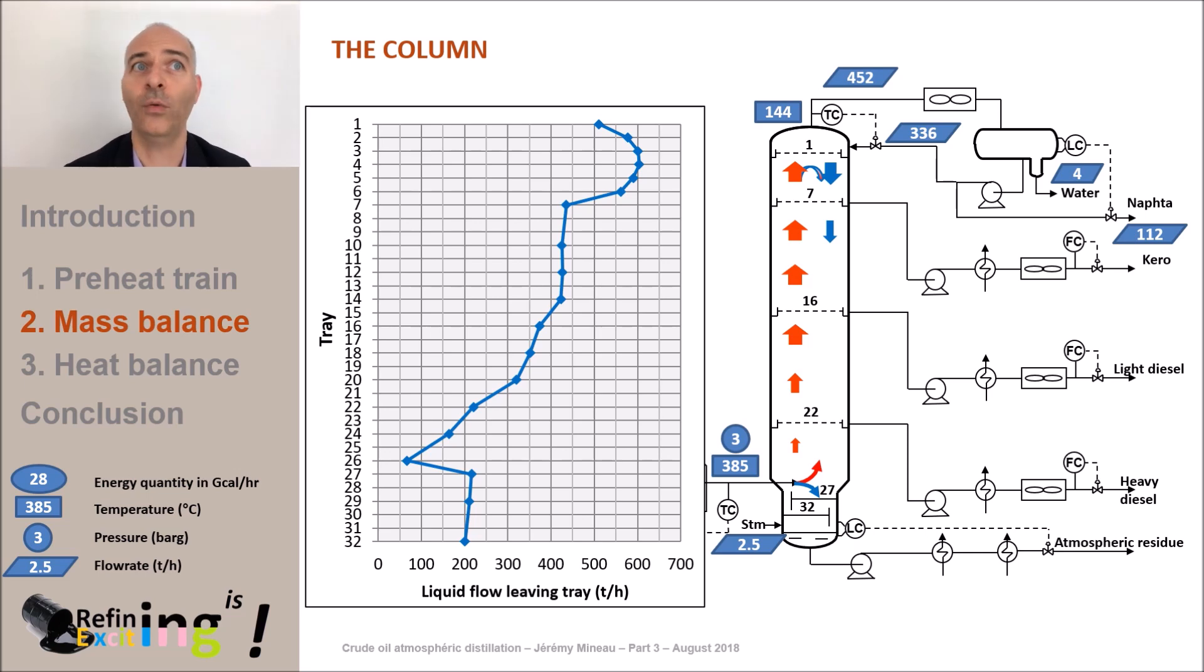At tray number 7, we extract the kerosene. As we saw in the first video, we will extract here a flow rate of 94 tons per hour, which corresponds to a 250 degrees C cut point between kerosene and light diesel. It's up to the panel operator to set the kerosene rates he wants. It can be seen from this graph that the flow of liquid drops by about 100 tons per hour on tray 7, since 94 tons per hour of liquid is removed from the column. The kerosene withdrawal temperature is 230 degrees C. We will see later that this is an important parameter.